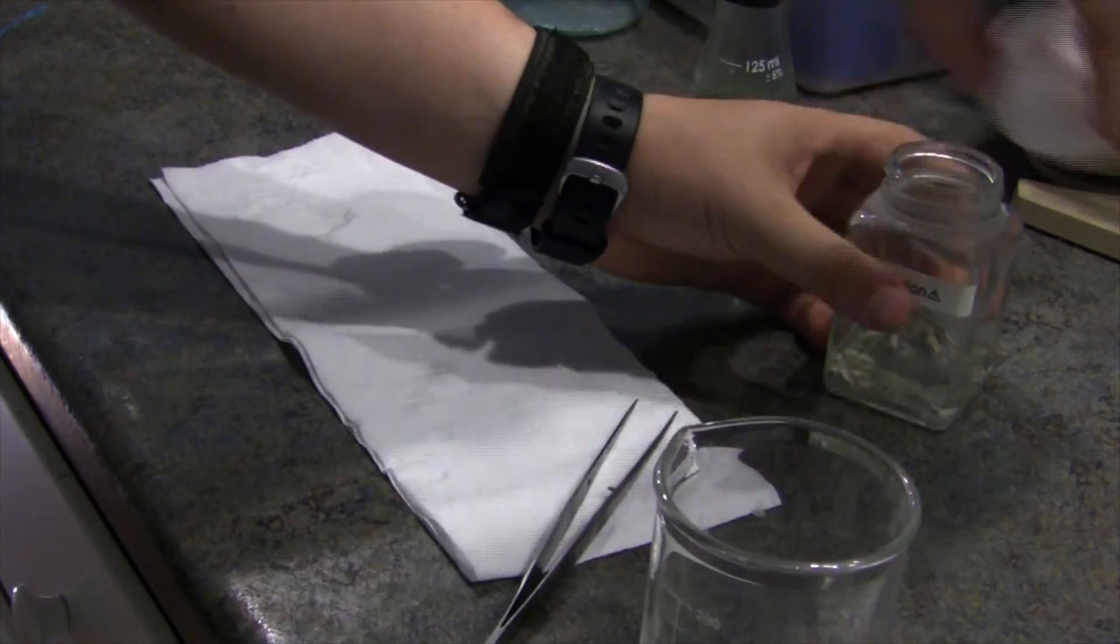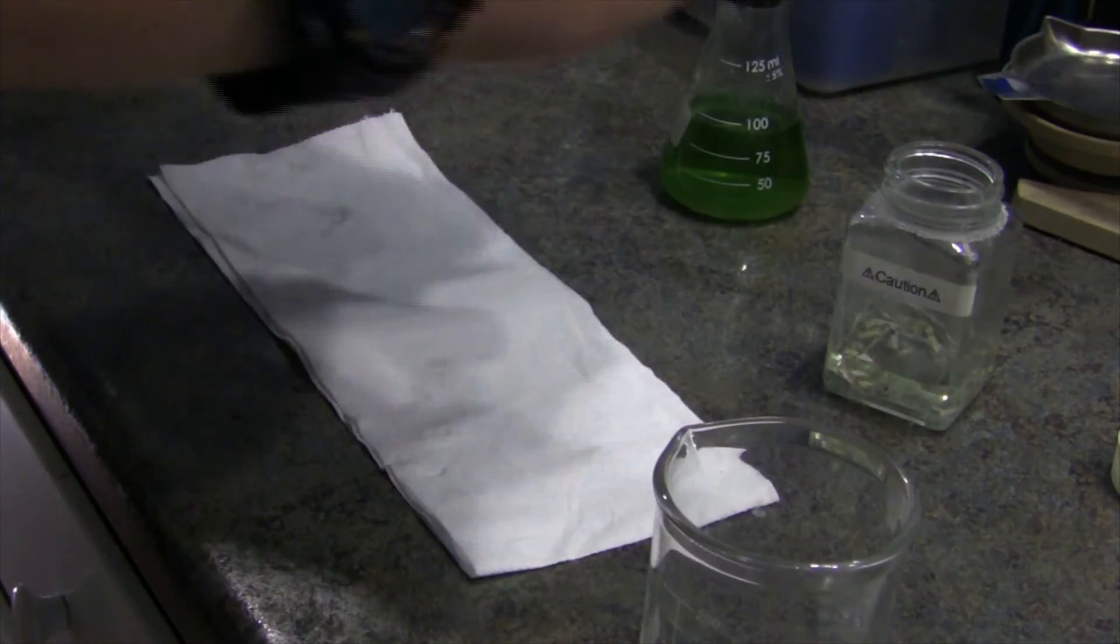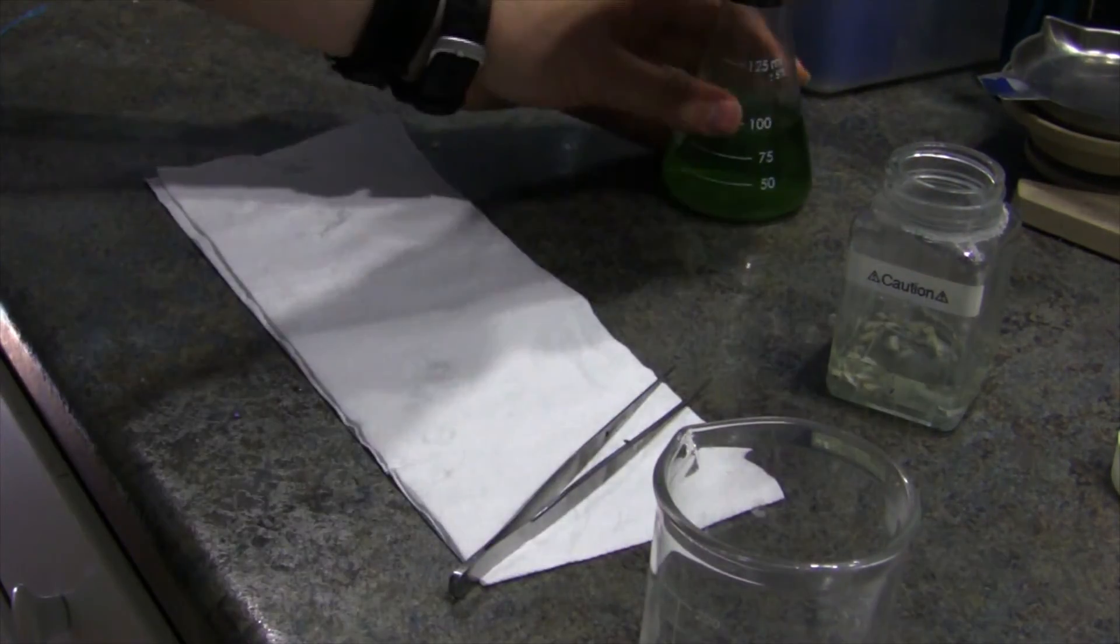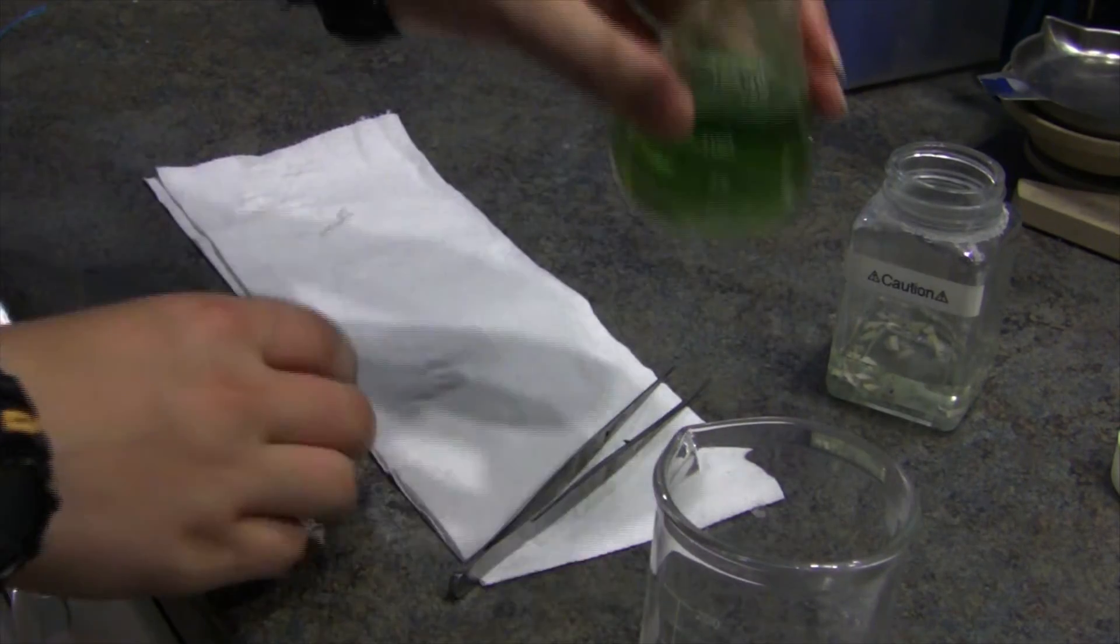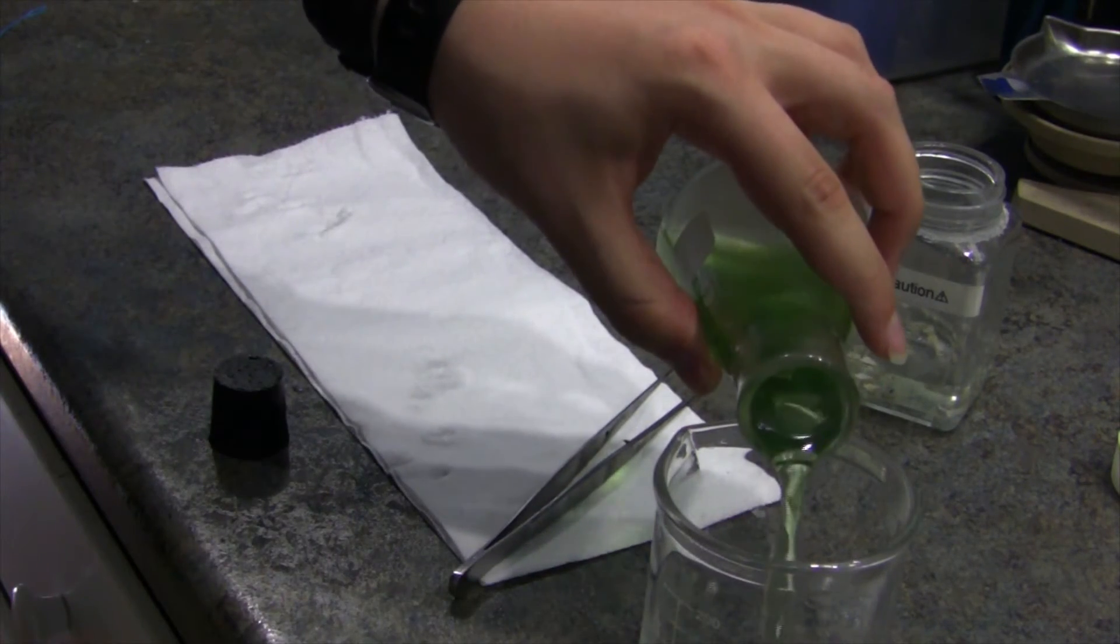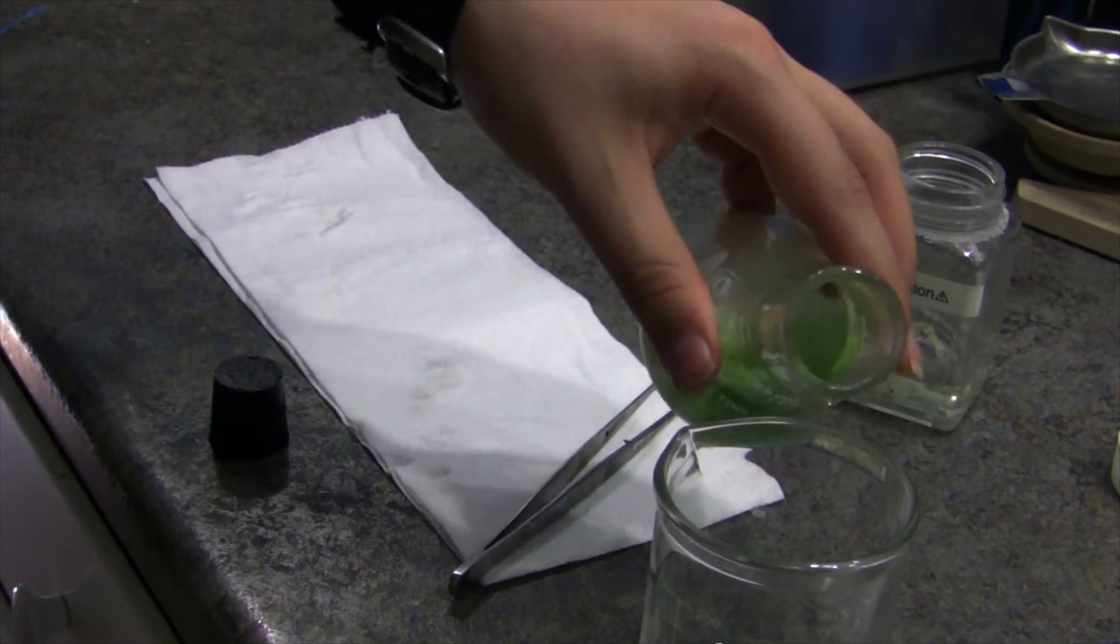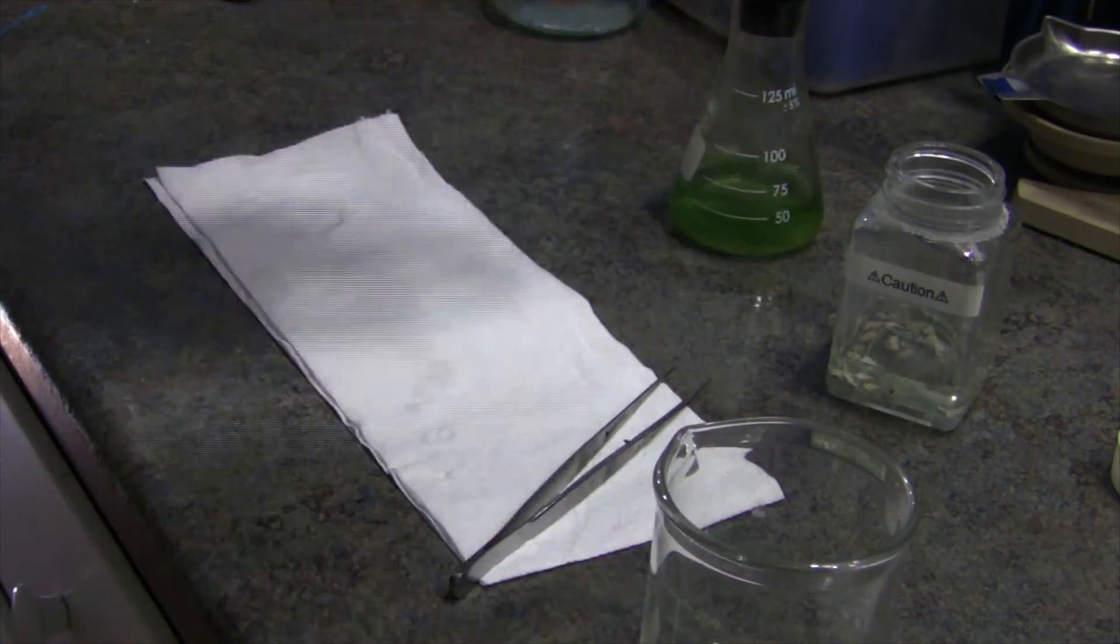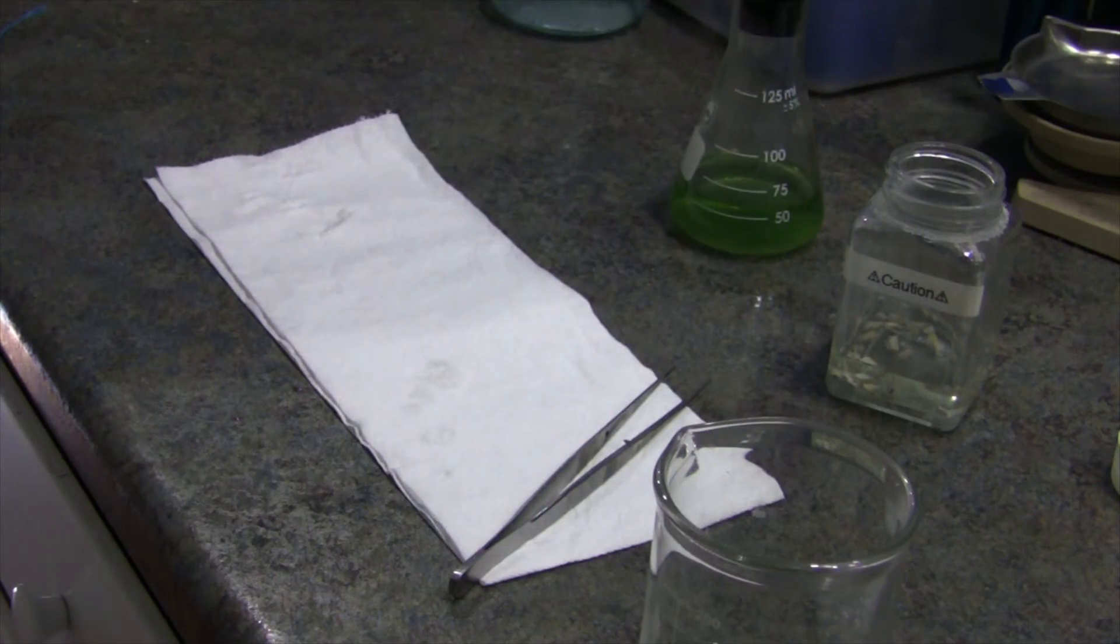Now what we're going to do is wait on removing that. We're going to go ahead and add some universal pH indicator to our beaker, about 50 milliliters or so.